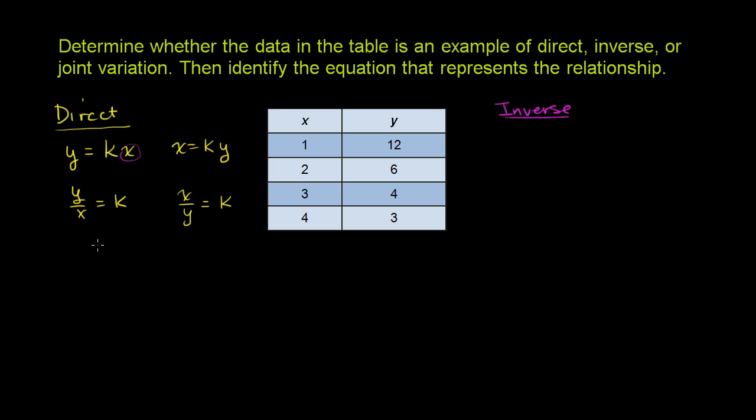The telltale signs of direct variation: if x increases, then y will increase and vice versa. The other telltale sign is if you increase x by some factor, so if you have x going to 3x, then y should also increase by that same factor.